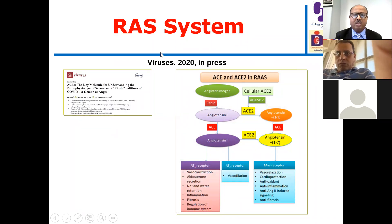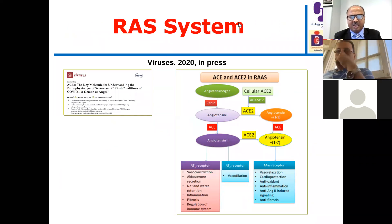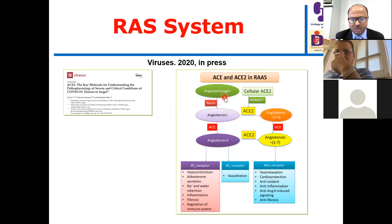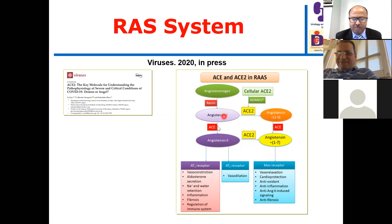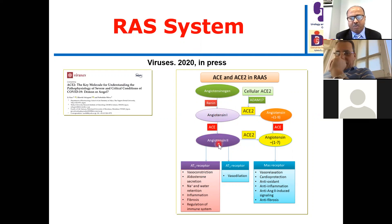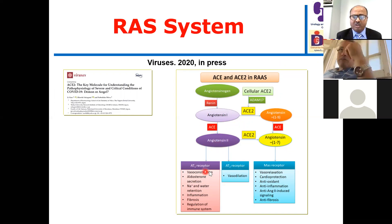This is a very important and basic point regarding how the renin-angiotensin system is organized. Step by step: angiotensinogen is converted into angiotensin-1 by the action of renin. Then angiotensin-converting enzyme — the famous enzyme inhibited by ACE inhibitors — transforms angiotensin-1 into angiotensin-2. Angiotensin-2 acts on two types of receptors. Stimulation of the angiotensin type 1 receptor leads to vasoconstriction, aldosterone secretion, sodium and water retention, inflammation, and fibrosis.